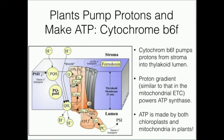The thylakoid has two main areas: a stroma and a lumen. Cytochrome B6F pumps protons from the stroma into the thylakoid lumen. This is something very important — it creates a proton gradient.